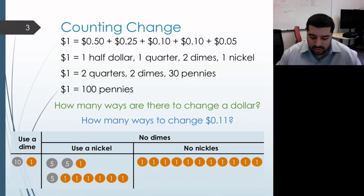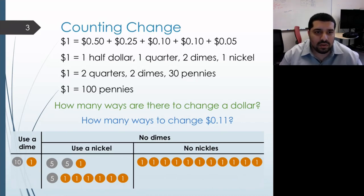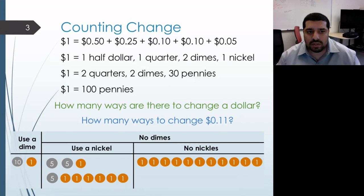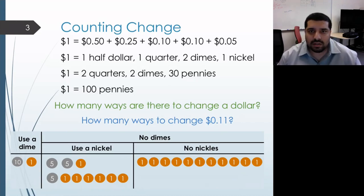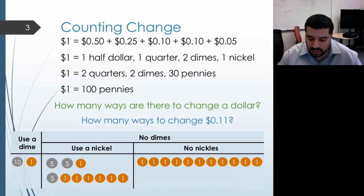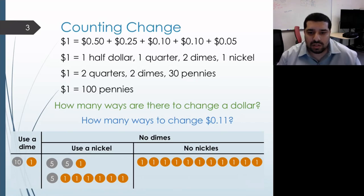We can go through this decision process of deciding whether to use a coin or not. If we decide we're not going to use a coin, then we have a fewer set of coins available to make the same amount of change. This is a simpler sub-problem. We have two inputs: the amount of change we need to make, and the set of coins we're allowed to use. By reducing the size of the set of coins allowed, we get a simpler sub-problem.